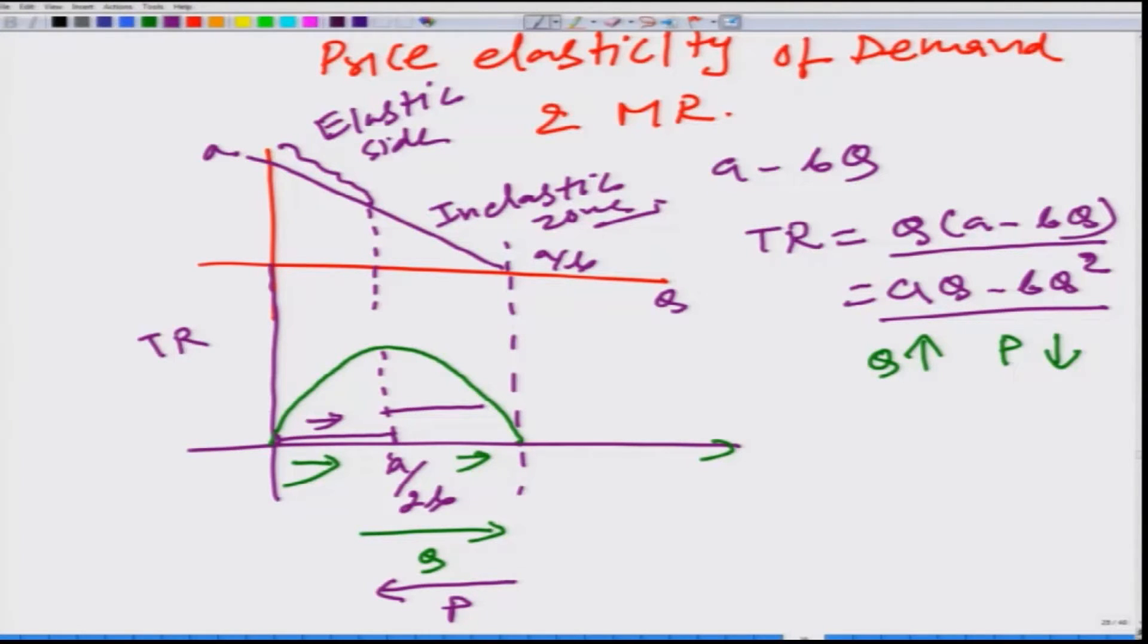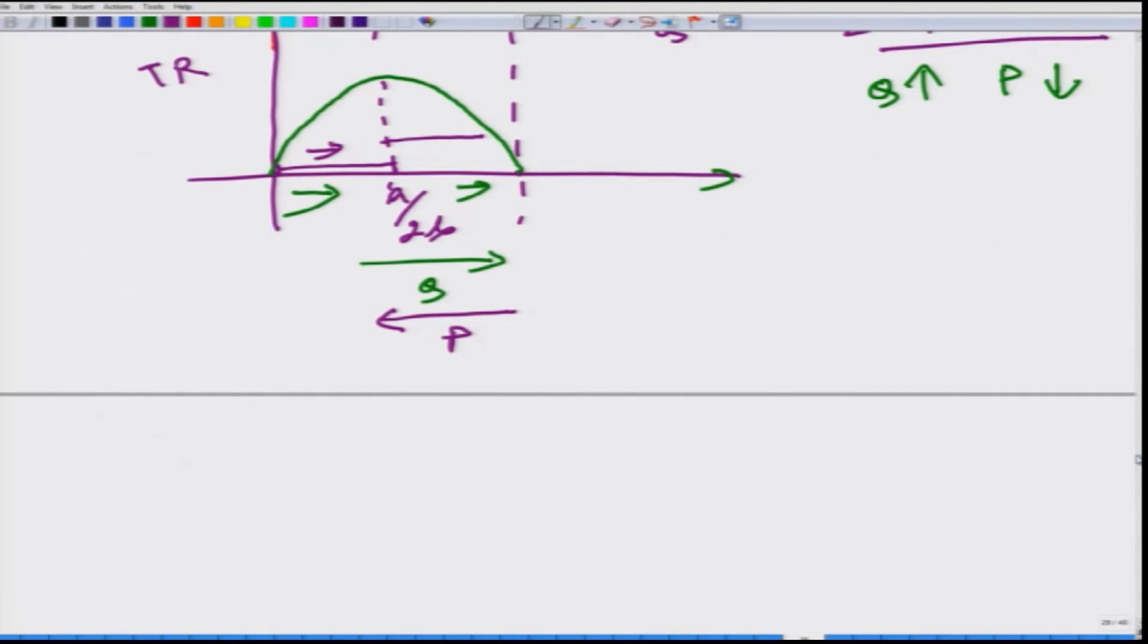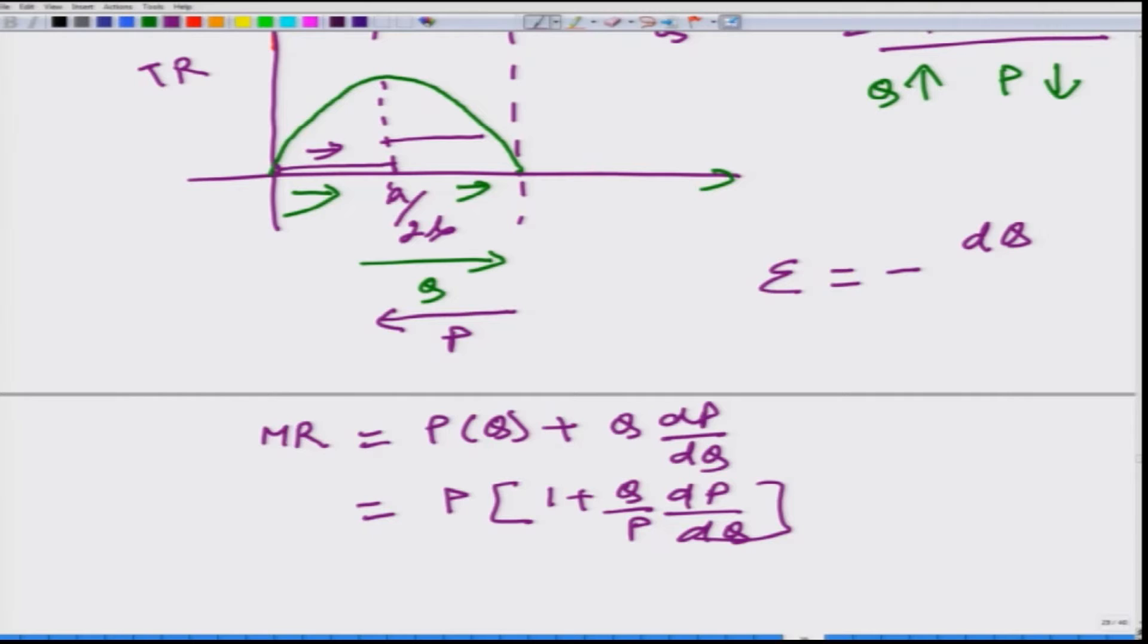We can say, and why should we just focus on the graph, because in graph the limitation is that we are looking at linear demand function. If we take the more general case, and we have already done this, what we obtain is that MR is equal to P as a function of Q plus Q dP by dQ. We had taken P out and what we get is Q by P dP by dQ.